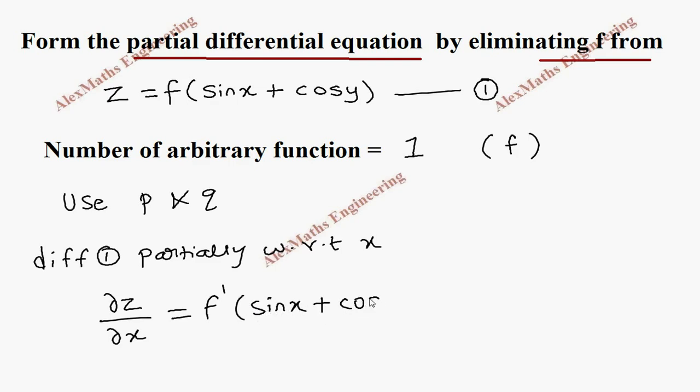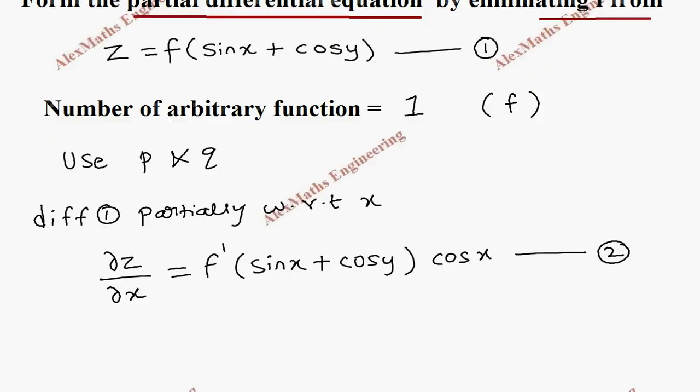The derivative of sin x is cos x, and cos y is treated as a constant because we are doing partial derivative with respect to x. So the y terms are constant. Let's keep this as the second expression.